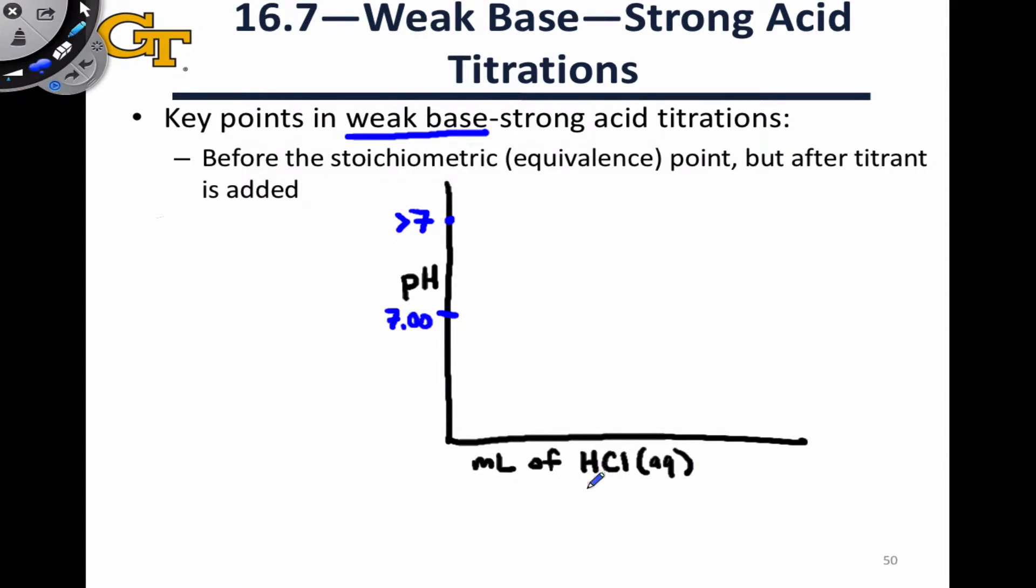Our titrant is the strong acid HCl, so as we add the titrant the pH is going to decrease. After a very brief relatively quick initial dip, we end up with a relatively flat region of the titration curve before the stoichiometric or equivalence point.